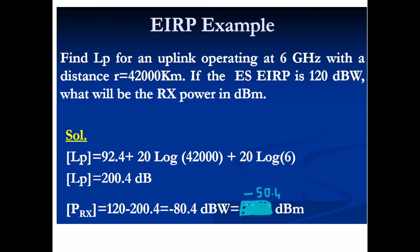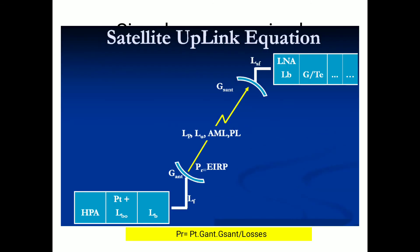Let's solve one more problem: calculate the loss for an uplink operating at 6 GHz with a distance of 42,000 km. If the Earth station EIRP is 120 dBW, what will be the received power? Received power equals transmitted power minus the losses. Since no other losses are specified, the losses are free space losses, given by the formula (4πrf/c)². Substituting the values, the received power is −80.4 dBW, or adding 30 gives −50.4 dBm.